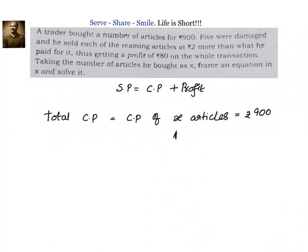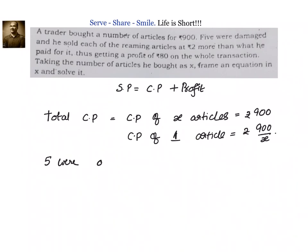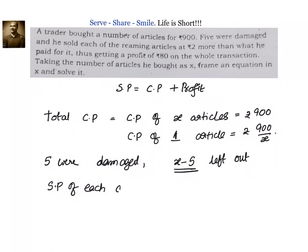If x articles cost 900 rupees, then the CP of one article is 900 divided by x. Out of x articles, 5 were damaged, so he was left with only x minus 5 and he sold only x minus 5. He sold them for 2 rupees more than the CP of each article, so the SP of each article equals 900 by x plus 2 rupees.